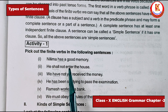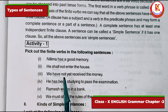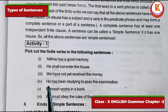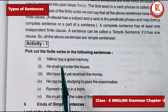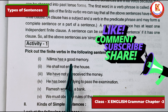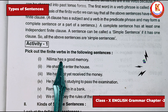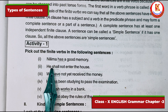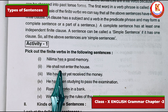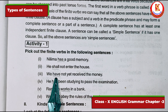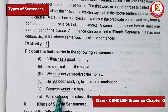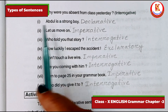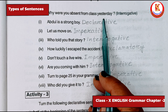In activity one, you have to pick out the finite verb. The first verb of any sentence is the finite verb. For example: 'Nirma has a good memory' — 'has' is the finite verb. 'He shall not enter the house' — 'shall' is the finite verb. Then 'have' is a finite verb, 'has' is a finite verb, 'works' and 'must' are also finite verbs.